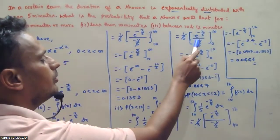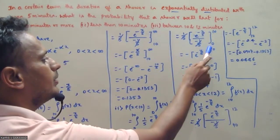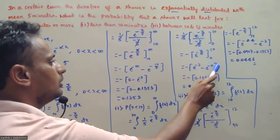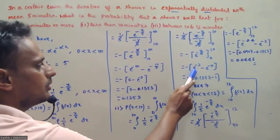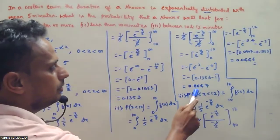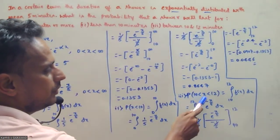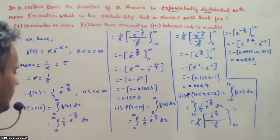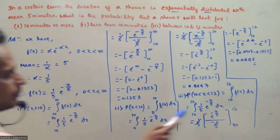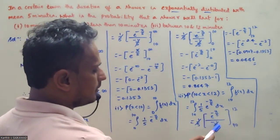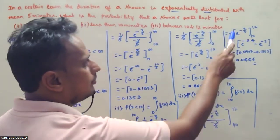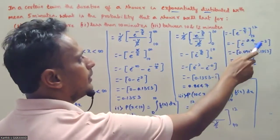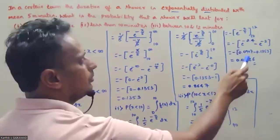Continuing the recap: limits 0 to 10, (1/5) cancels, giving minus e^(-x/5) from 0 to 10. Upper limit: e^(-10/5) = e^(-2); lower limit: e^(0) = 1. For the third part, P(10 < X < 12): integral from 10 to 12, f(x) = (1/5)e^(-x/5), applying limits 12/5 = 2.4 and 10/5 = 2.